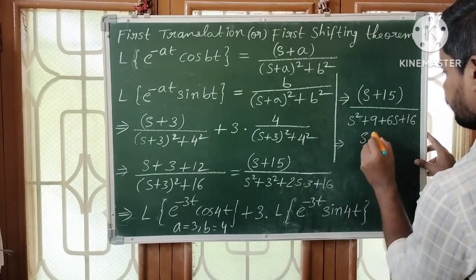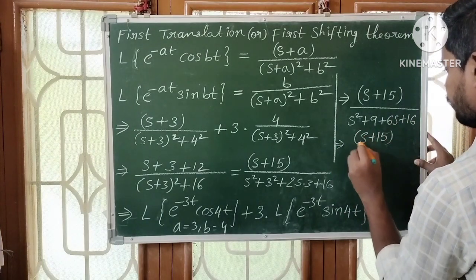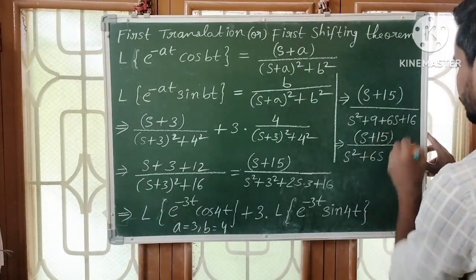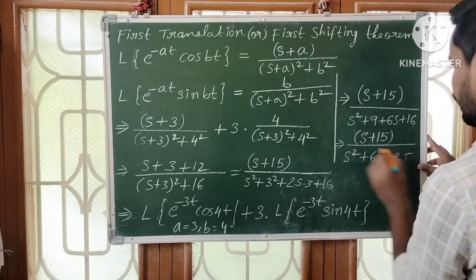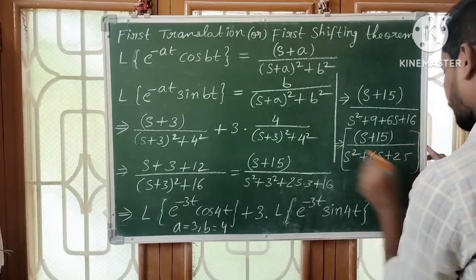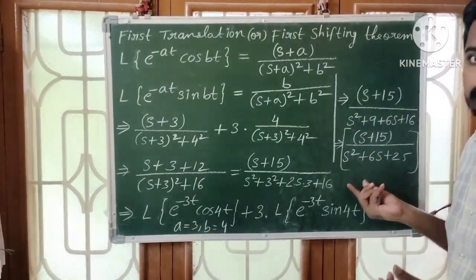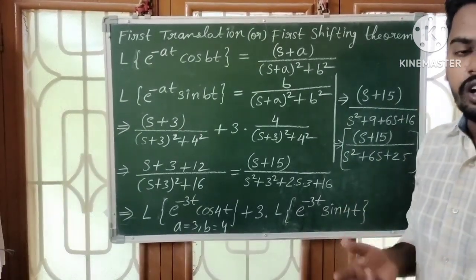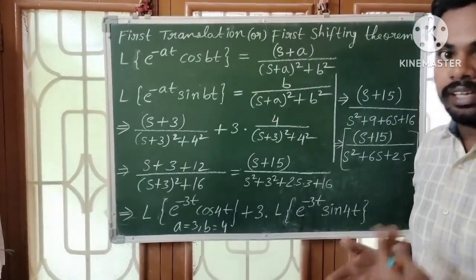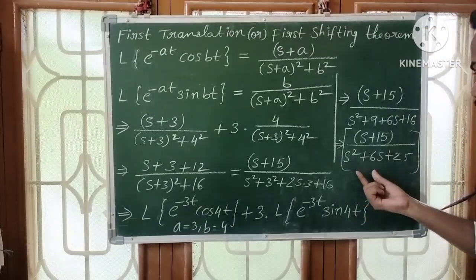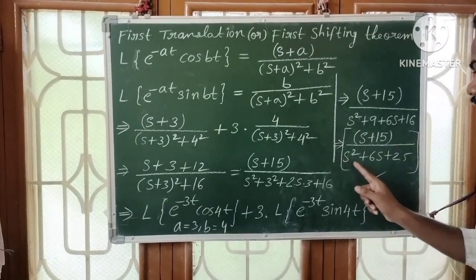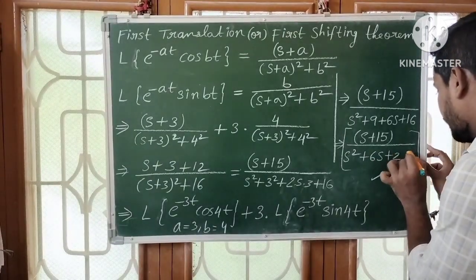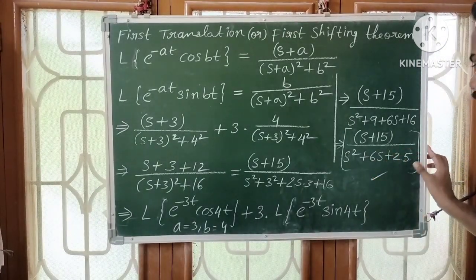So the final answer: the Laplace transform of e^(-3t)(cos4t + 3sin4t) is equal to (s+15) divided by (s² + 6s + 25). This is our final answer.